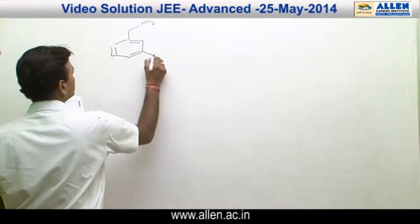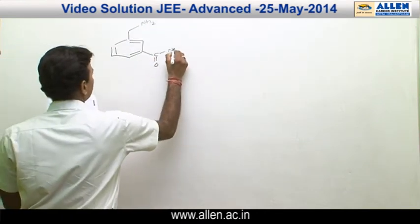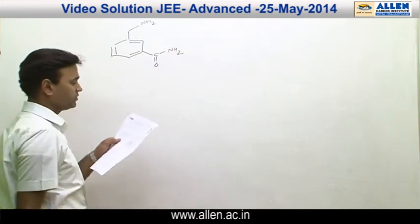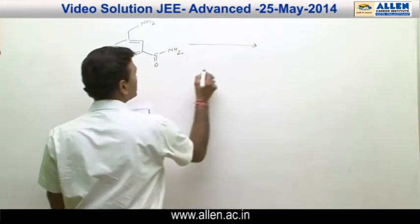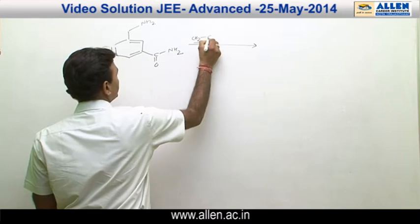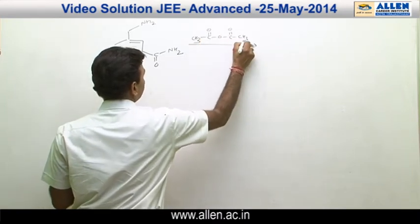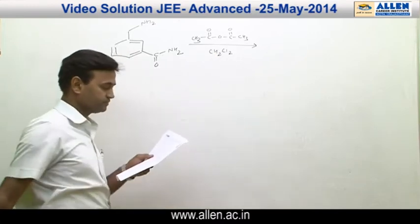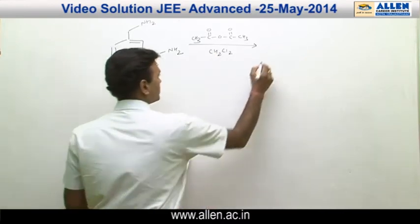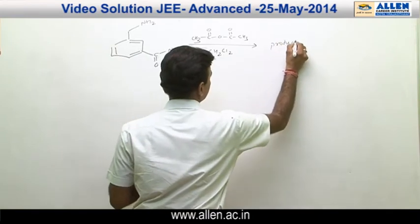Here, a primary amine has been given to us. An amide group has been given to us, and the reaction is carried out with acetic anhydride in presence of dichloromethane. Asking about the product or products formed.